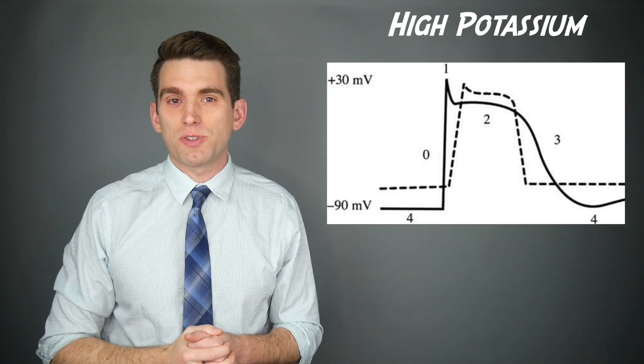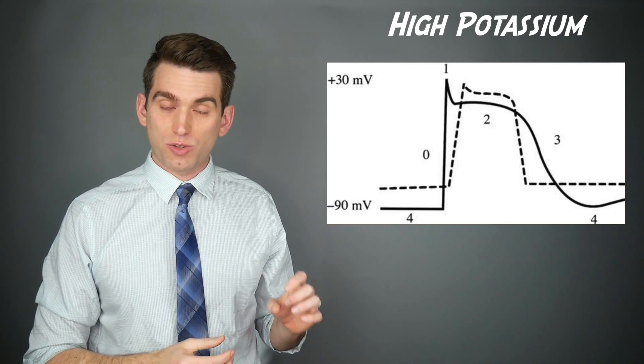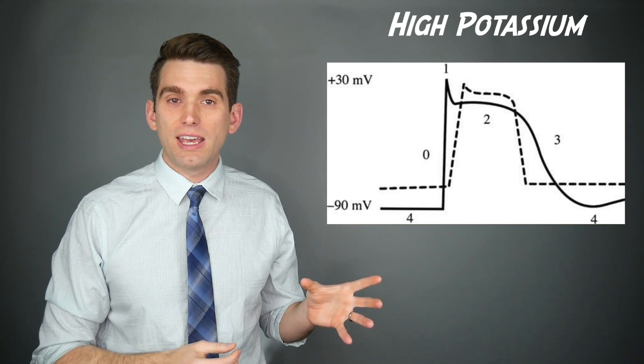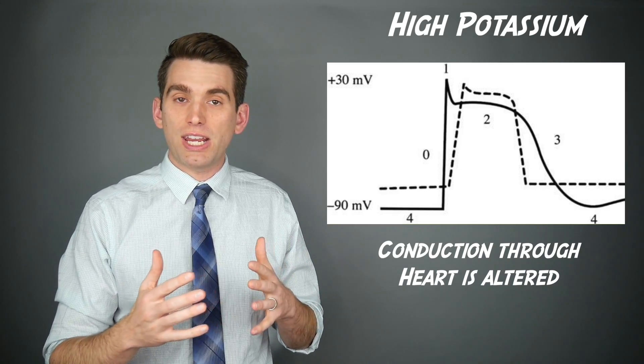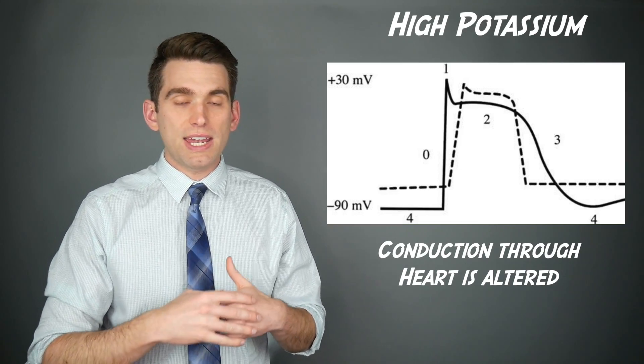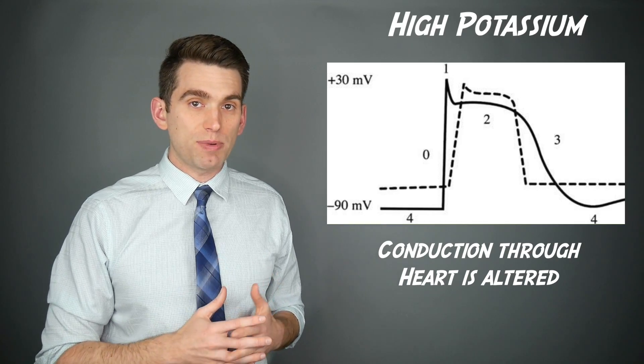When the potassium levels in your blood are too high, your action potential in the heart muscles goes from looking like this solid line to now the dashed line. Your resting membrane potential is higher and you get a change in the deflection of these curves and how this overall electrical signal gets propagated.